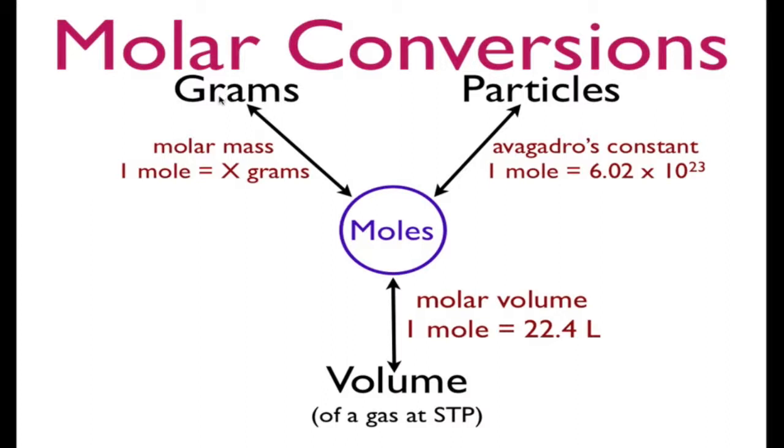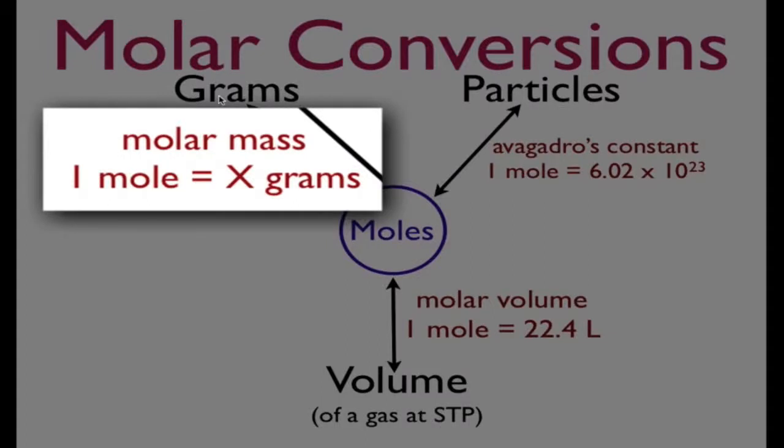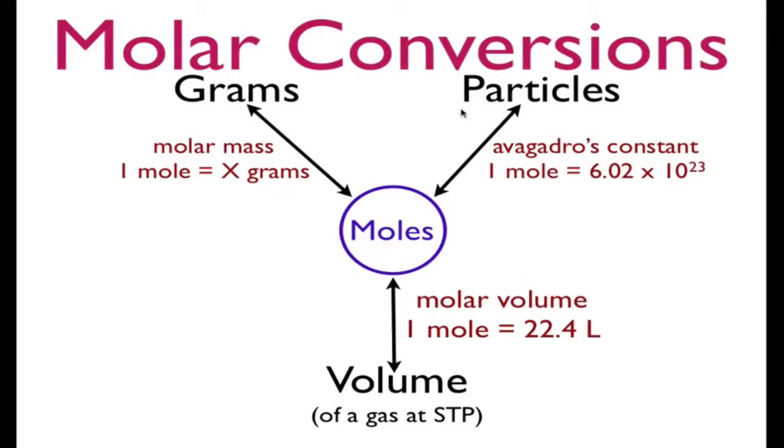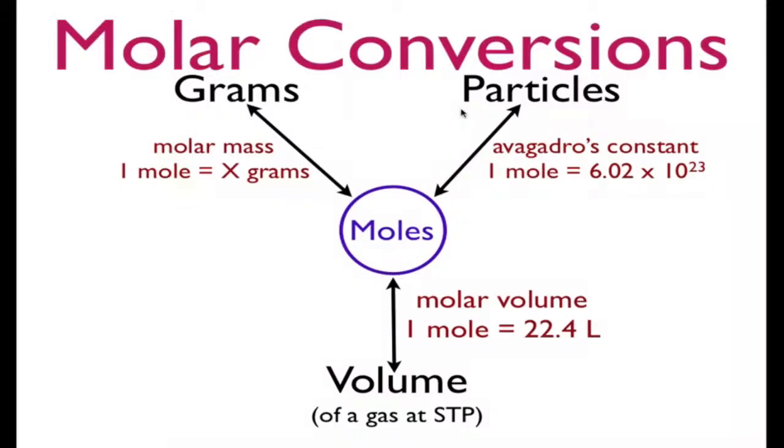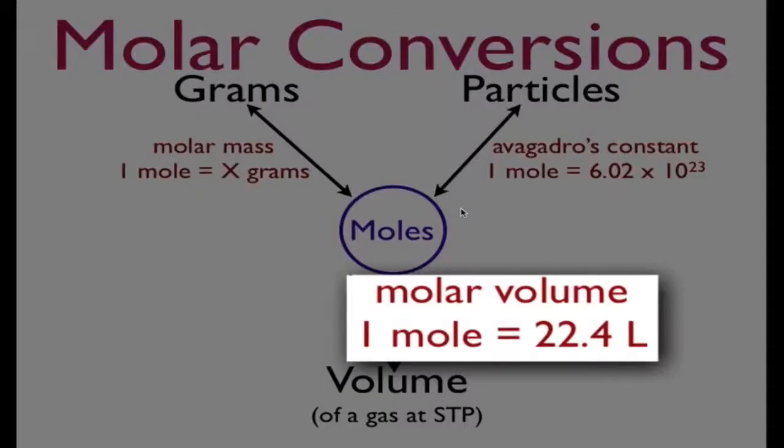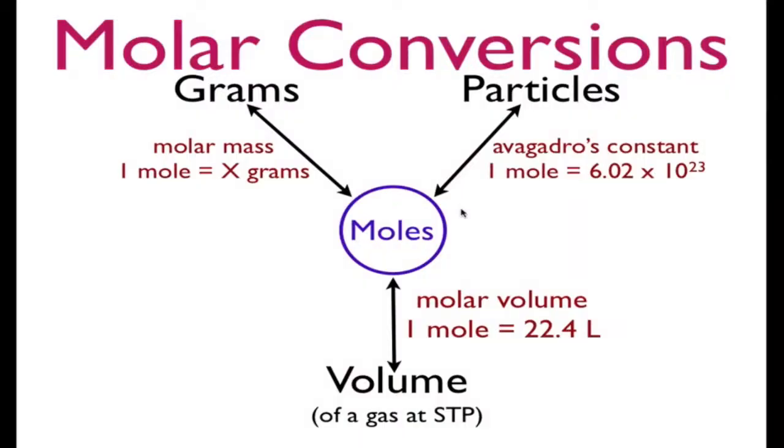We know that if we have a certain number of grams of substance, we can convert to moles through its molar mass because one mole of any substance has a fixed mass. We can convert between particles and moles through Avogadro's constant because one mole equals 6.02 times 10 to the 23rd particles, like molecules or atoms or ions. And the volume of a gas at standard temperature and pressure is related to the mole through its molar volume because one mole of any gas at STP has a volume of 22.4 liters.